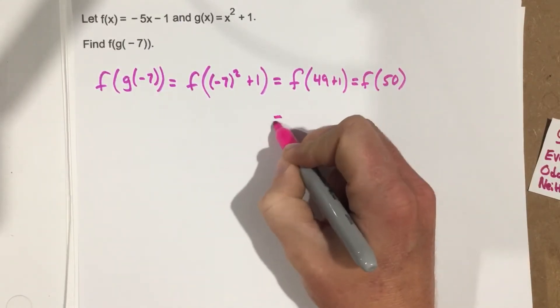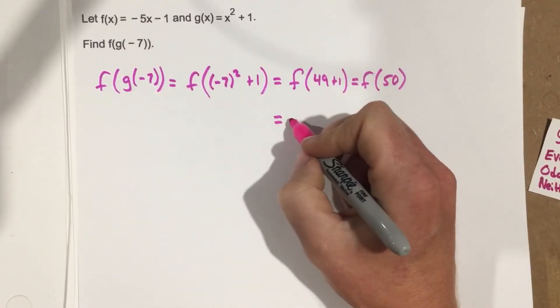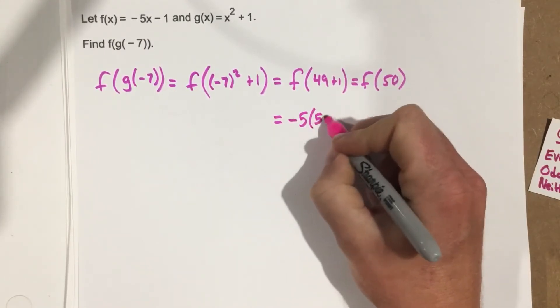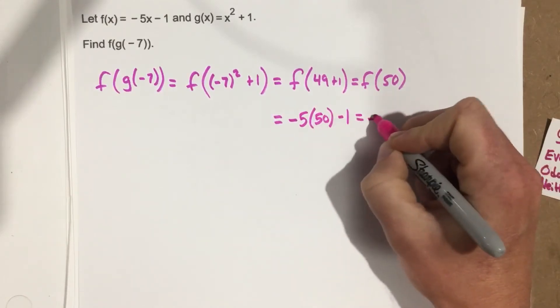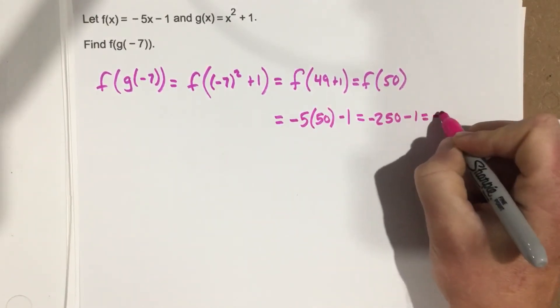Which gives you, when you plug in f of 50 into the f function, that's negative 5 times 50 here for x minus 1. That's negative 250 minus 1, which is negative 251.